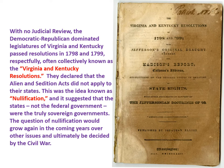With no judicial review, the Democratic-Republican-dominated legislators of Virginia and Kentucky passed resolutions in 1798 and 1799 respectively — often referred to together as the Virginia and Kentucky Resolutions — declaring that the Alien and Sedition Acts did not apply to their states. This is a hugely important idea known as nullification: the concept that a state can declare a federal law doesn't apply to it, suggesting that states, not the federal government, were the truly sovereign governments. This question of nullification would grow several times in the 19th century and would not really be decided until the Civil War.